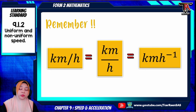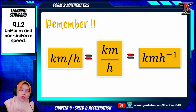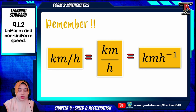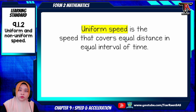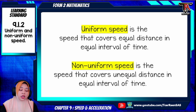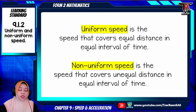Remember: km/h, km h⁻¹, and km per h all represent the same unit, so don't get confused if the question uses any one of these notations. In conclusion, uniform speed is the speed that covers equal distance in equal interval of time, while non-uniform speed is the speed that covers unequal distance in equal interval of time. I hope this helps you understand uniform and non-uniform speed. Till we meet again in another video — see you, Assalamualaikum, and happy studying!